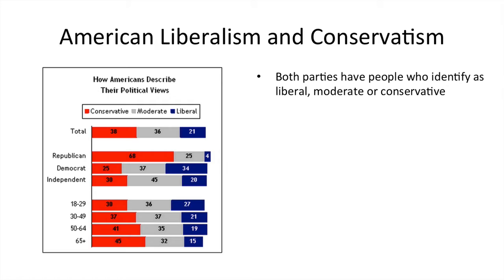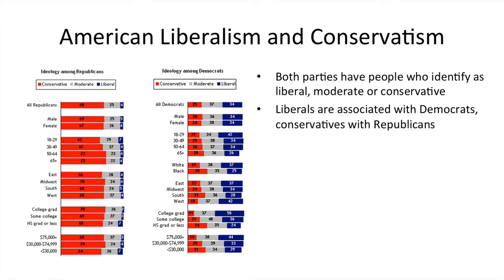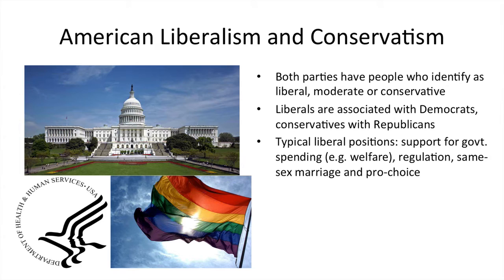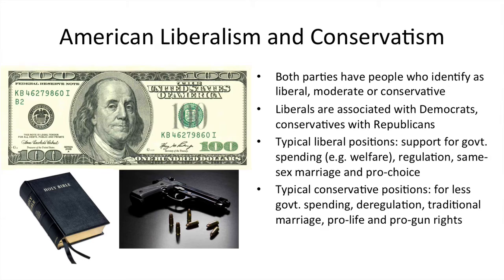American liberalism and conservatism are the ideologies you need to know about. Both parties have people who identify as liberal, moderate, or conservative, although liberals are mostly associated with Democrats and conservatives with Republicans. Typical liberal positions include support for government spending — welfare, regulation — and being open to same-sex marriage and being pro-choice on abortion. Typical conservative positions include less government spending, deregulation, traditional marriage, being pro-life, and supporting gun rights. Conservatives don't have to agree with all of these; these are just typical positions.